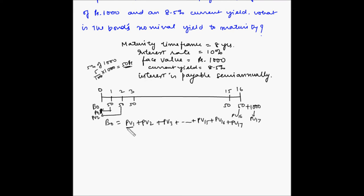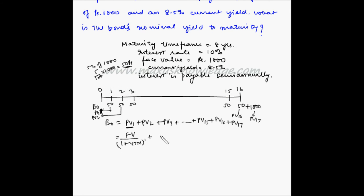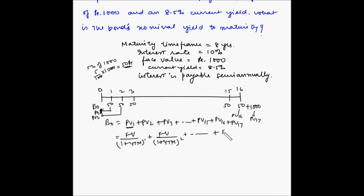We know that present value equals future value divided by one plus the interest rate, where the interest rate will be the yield to maturity. Taking PV16 as an example, it will be future value divided by one plus YTM to the power 16. And PV17, which takes into consideration the maturity value M, is 1000 divided by one plus YTM to the power 16. We know the future value is the interest payment of 50, and M is 1000.